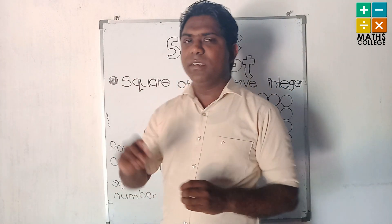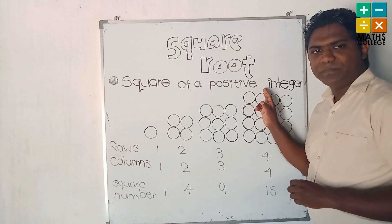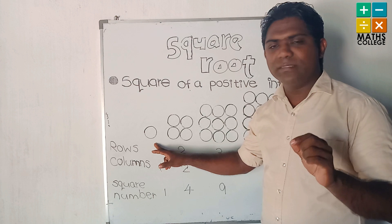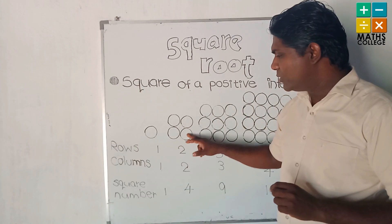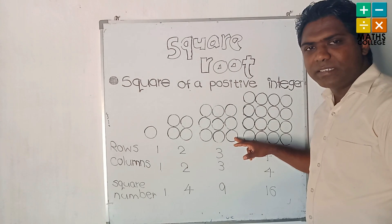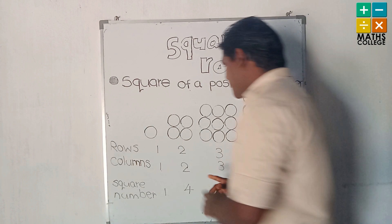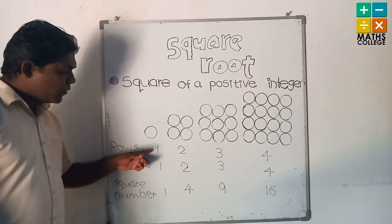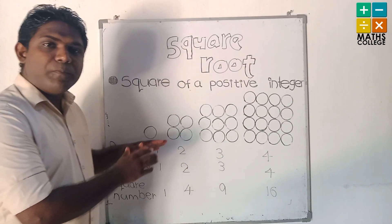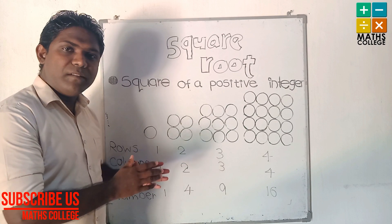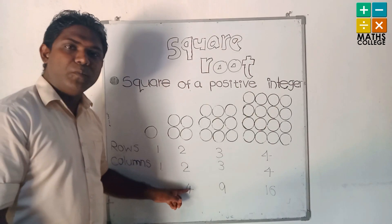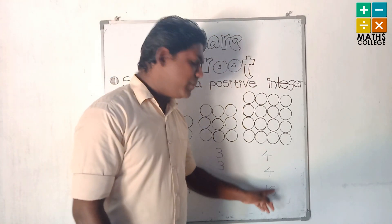First, we identify what is the square of a positive integer. You can see some figures here. The first figure has one small circle, the second has four circles, the third has nine circles, and the fourth has sixteen circles. Each figure has the same number of rows and columns, and the number of rows multiplied by the number of columns gives us the square number: 1×1=1, 2×2=4, 3×3=9, 4×4=16.